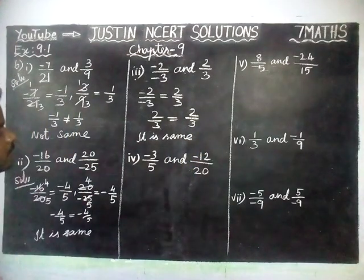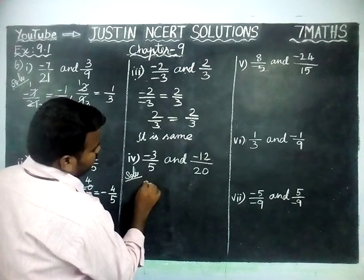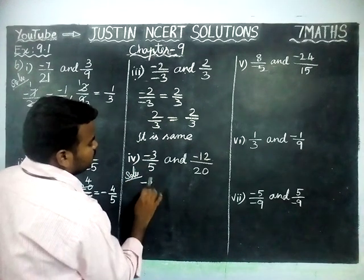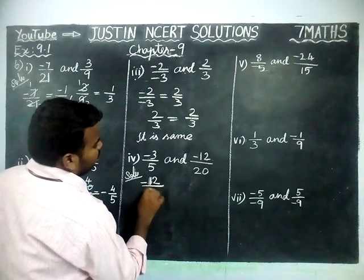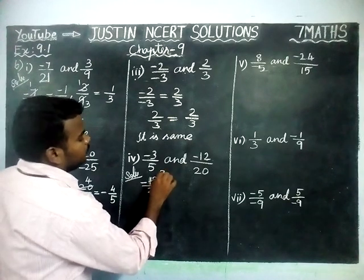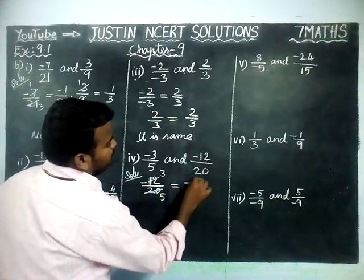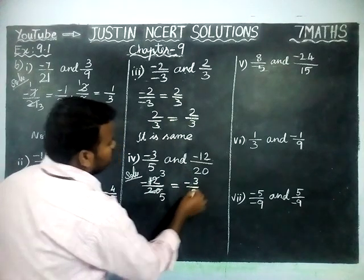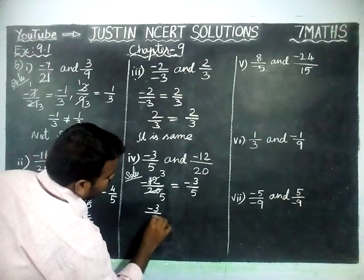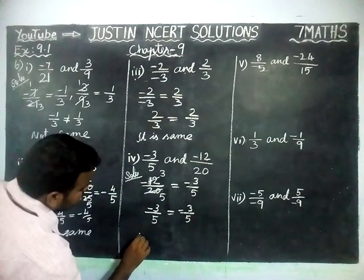Fourth pair: minus 3 by 5 — we cannot simplify this further. Next: minus 12 divided by 20. We divide by the common divisor 4 — 3×4 is 12, 5×4 is 20 — so that is minus 3 by 5. We already have minus 3 by 5, so minus 3 by 5 equals minus 3 by 5 — it is the same.